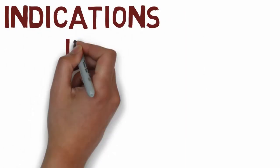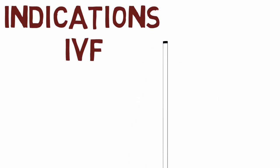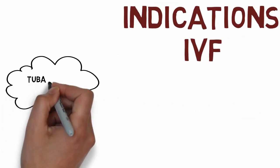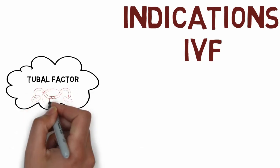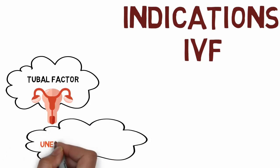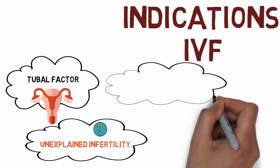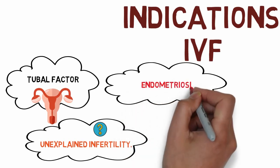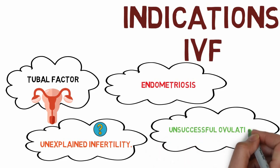Now let's look at the indications for conventional IVF and ICSI. Conventional IVF is indicated in the absence of male factor infertility, meaning the male partner has normal semen parameters. In this case, conventional IVF can be used for female factor causes such as blocked fallopian tubes, unexplained infertility, endometriosis, and cases where previous ovulation induction attempts have been unsuccessful.